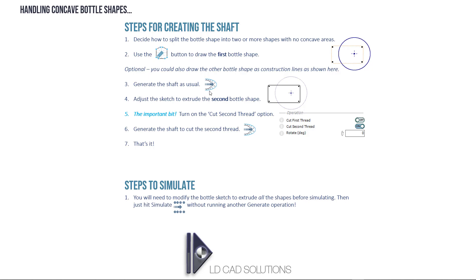It really isn't much more complex than filling in the bottle shape and it's super simple to combine multiple bottle shapes into a compound bottle shape. One other thing to mention: if you want to simulate the movement of the bottles, you'll need to extrude the full combined profile after you've generated the shaft so that the simulation shows the accurate full bottle shape as the bottles move along the shaft. Okay, let's jump into Inventor and create a shaft using a bottle shape like this one.